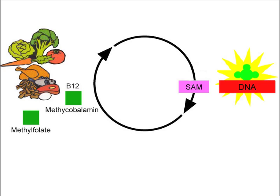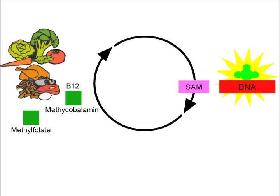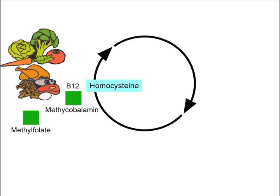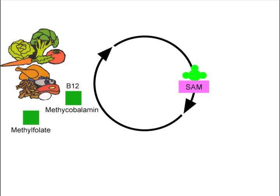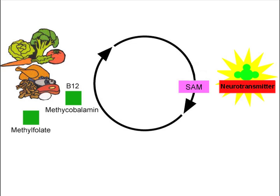Now that SAM no longer has its methyl group, it is transformed into homocysteine. The homocysteine is recycled to make more SAM, and the cycle starts over. In another example, SAM donates a methyl group to an amino acid to make a neurotransmitter. There are over 40 such reactions in the body requiring methylation, with SAM being the major methyl donor.